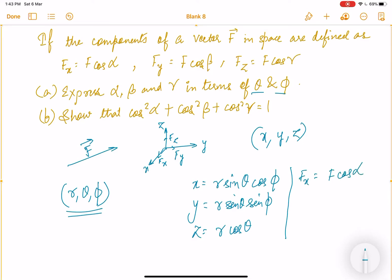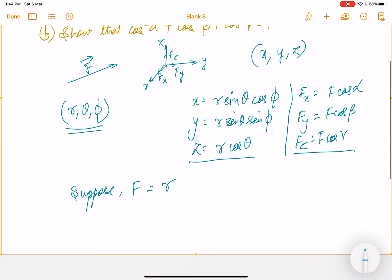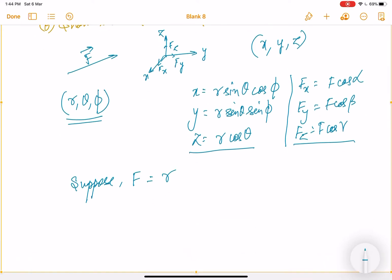Now if I see this, if I compare this, then you can see this z component first of all. Suppose f is equal to r. f is just the magnitude, and r is also a magnitude. So over here, suppose f is equal to r. And so, by this assumption, I can say theta is equal to gamma.